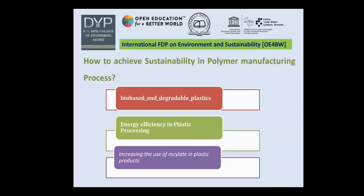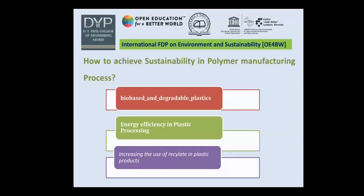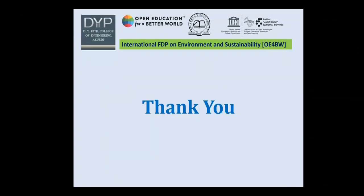To achieve sustainability in the polymer manufacturing process: first, use bio-based and degradable plastics; second, improve energy efficiency in plastic processing; and third, increase the use of recycled content in plastic product markets.